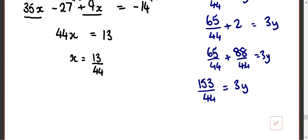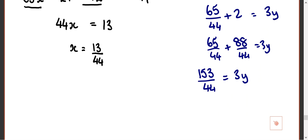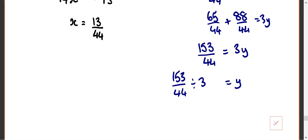So just divide by 3. Divide by 3? How do you do a fraction divided by 3? 153 divided by 44 divide by 3 is y. So to divide a fraction by a whole number, you actually multiply the denominator, if you remember that, from your M1 days.